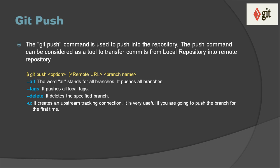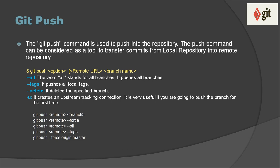Last but not least, you can specify `-u`, which creates an upstream tracking connection. It is very useful if you are going to push a branch for the first time. If you are pushing your code to GitHub for the first time, you have to set the upstream, and for that you specify `-u` along with git push.